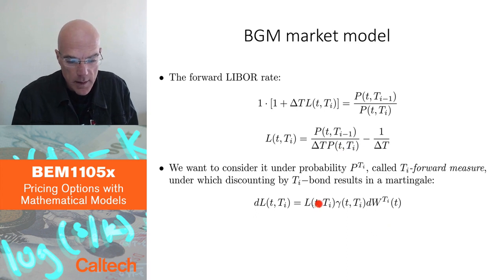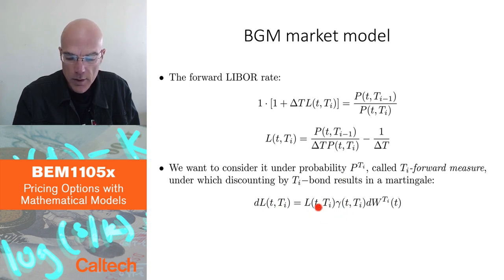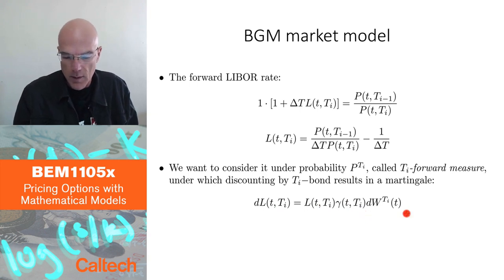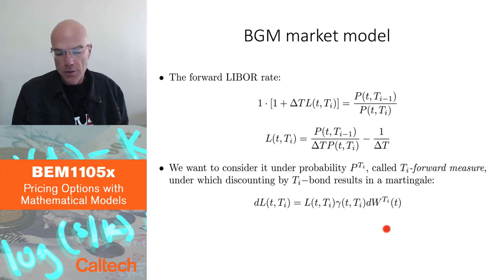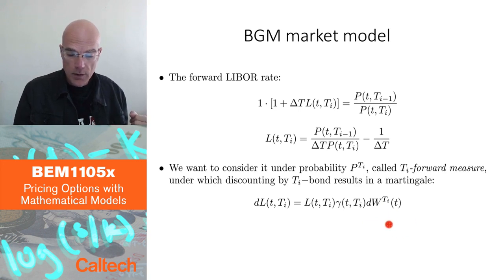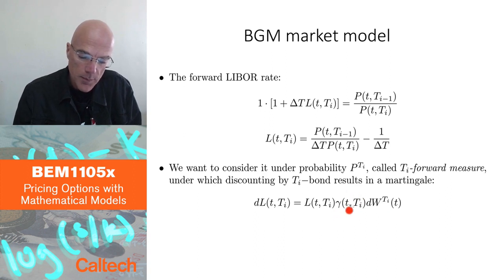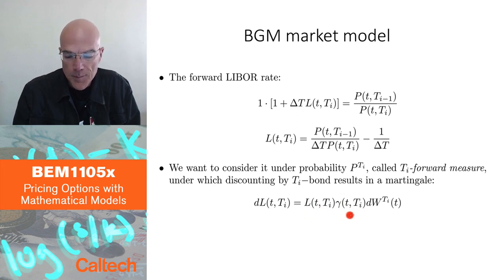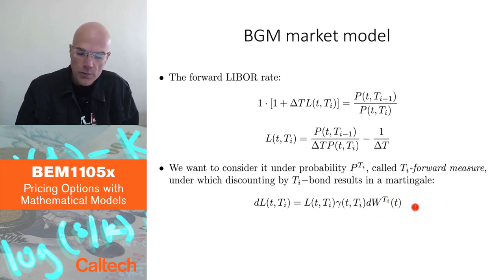If you can do that, then since it's a martingale under such a probability, it's going to be written as a stochastic integral. This is the martingale representation theorem, which tells you that every stochastic integral is a martingale, but there is also a reverse statement: every martingale in Brownian motion models can be written as a stochastic integral. So there will exist a process gamma such that the LIBOR rate is written as L times gamma dW^{T_i}, where W^{T_i} is Brownian motion under the T_i forward measure.